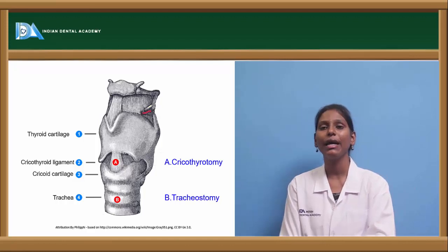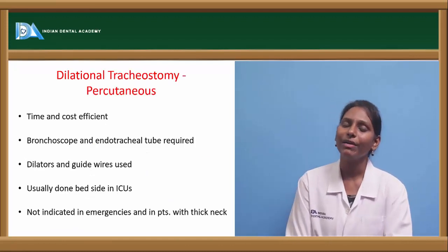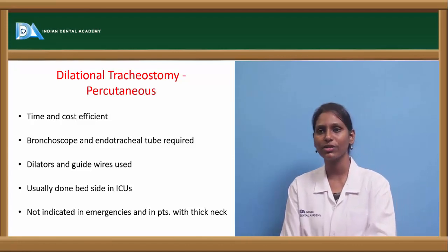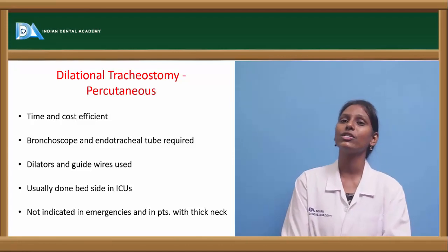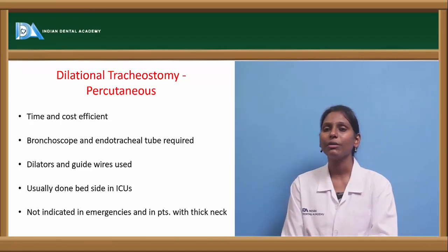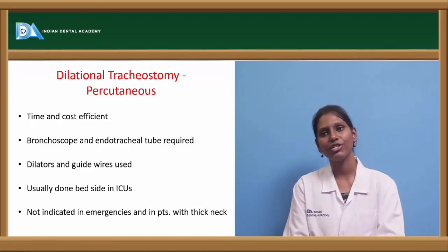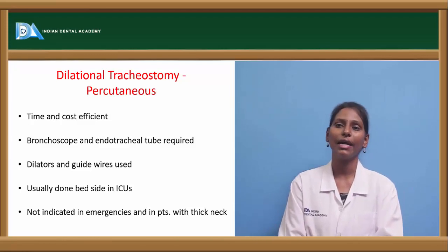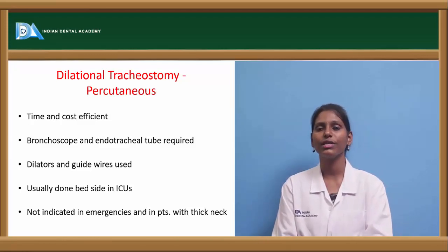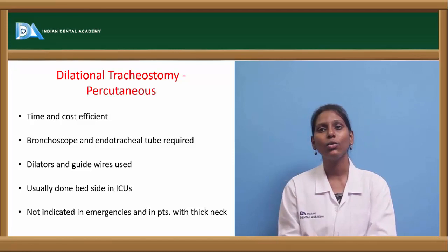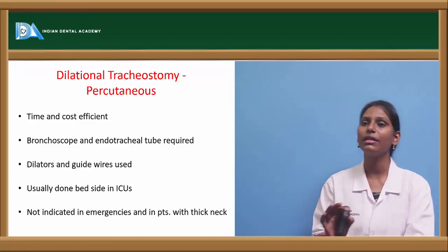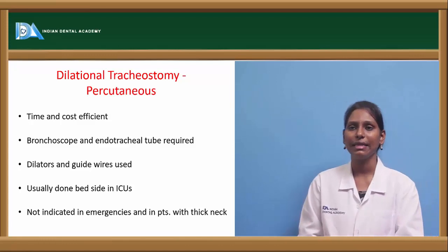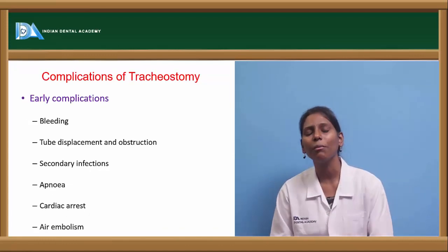Another procedure is percutaneous dilational tracheostomy, which is preferred for being time and cost efficient. It uses a bronchoscope, endotracheal tube, guide wires, and dilators. It is done bedside, especially in the ICU, but is not indicated in emergencies or in patients with a thin neck.